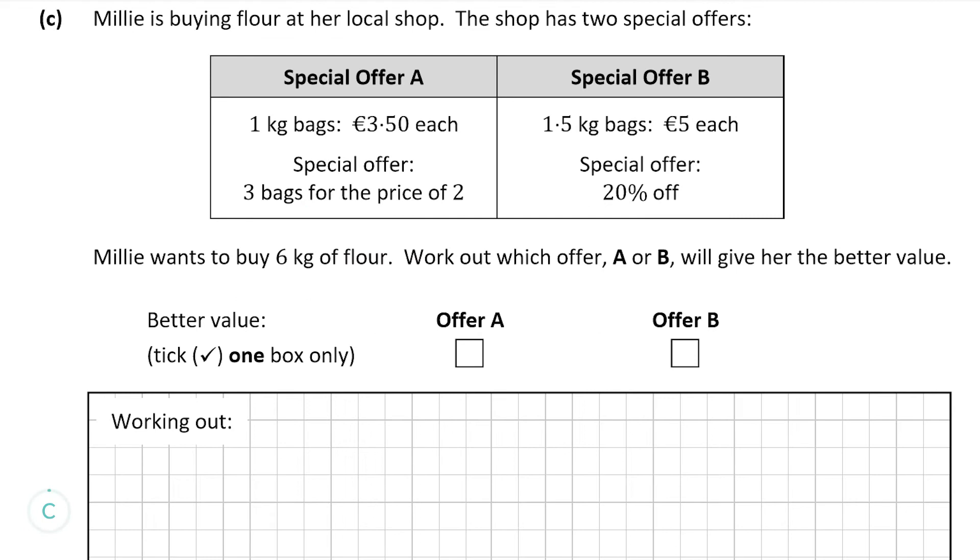Now let's move on to part C. We're told that Millie's buying flour at her local shop and they have two special offers, A and B. Special offer A has 1 kg bags at €3.50 each. The offer itself is three bags at the price of two. Basically for every three bags you get one free. Offer B has 1.5 kg bags at five euro each. The special offer here is that they are 20% off.